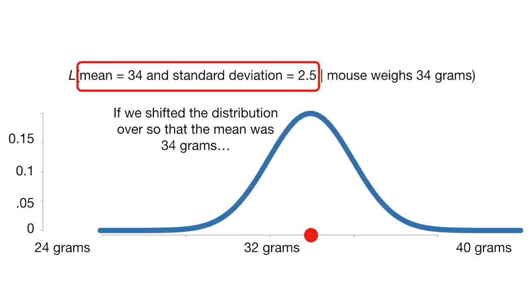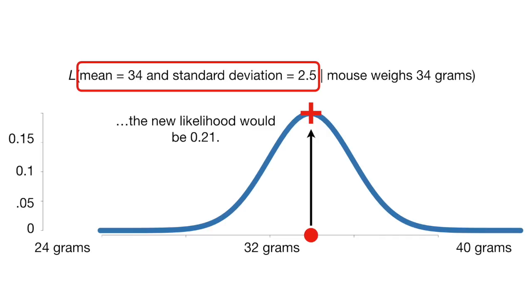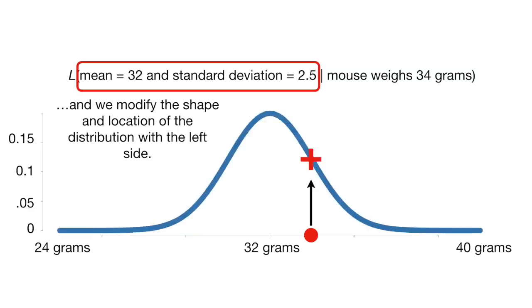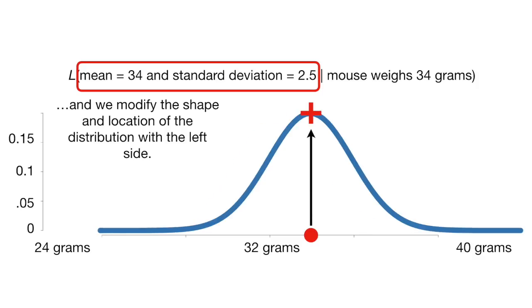If we shifted the distribution over so that the mean was 34 grams, the new likelihood would be 0.21. So with likelihoods, the measurements on the right side are fixed, and we modify the shape and location of the distribution with the left side.